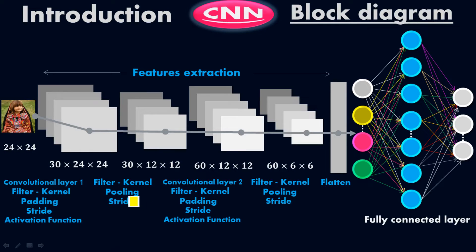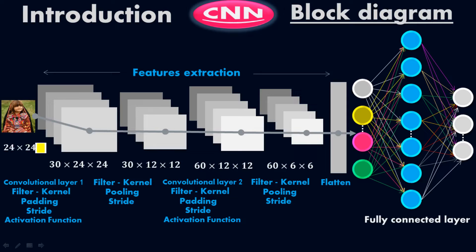With the help of pooling and stride — we have two types of pooling: max pooling and average pooling, and we'll cover each of them including the mathematical details — we have reduced the dimension of the image to 12 by 12. So from 24 by 24 it became 12 by 12. Here, 24 by 24 means 24 columns and 24 rows, which are the pixel counts. Similarly, 12 by 12 are the number of pixels — so with 30 filters, we reduced the dimension using pooling and stride.